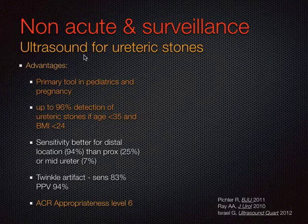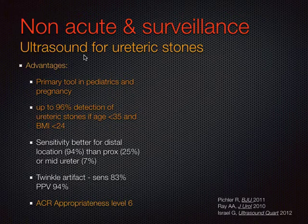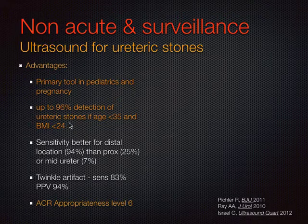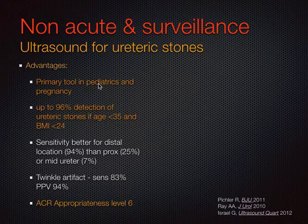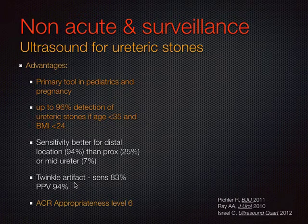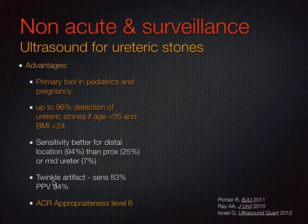Ultrasound has traditionally been viewed as the black sheep in the family for detection of calculi. The pooled sensitivities for combined kidney and ureter stones is around 60–65%. Ultrasound is better at detecting renal calculi than ureteric stones, but in selected patients—particularly those with a lower body mass index—it is possible to detect stones in the ureter. It's the primary tool for follow-up of pediatric and pregnant patients. Ultrasound is much better for localizing stones in the distal 5 centimeters of the ureter, with very high sensitivity. A recently described color Doppler artifact called the twinkle artifact can improve sensitivity and positive predictive value dramatically.